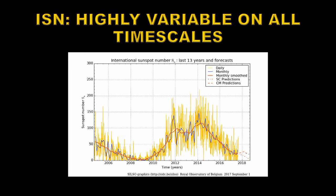The sunspot number tends to be highly variable. This is the plot for solar cycle 24. In yellow is the daily sunspot number, which fluctuates quite wildly from day to day. A monthly average, shown in blue, smooths it out slightly. More commonly, we take a smoothing of 13 months — the red curve — which produces a nice, controlled signal without a great deal of fluctuation.